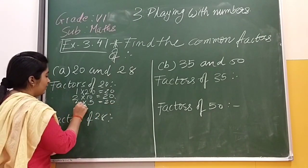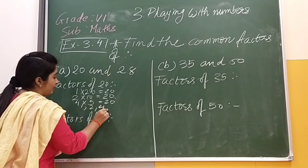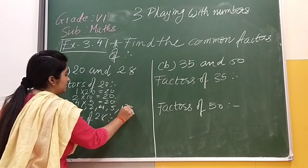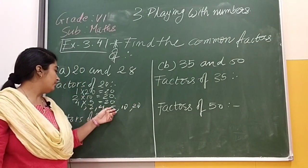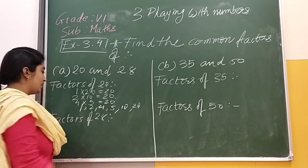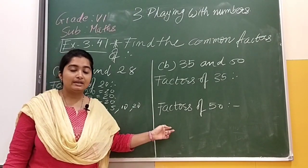Now the factors are 1, 2, 4, 5, 10 and 20. First one concept that is 1, 2, 4, 5, 10 and 20. Here we have it.